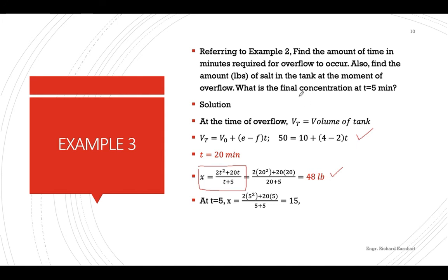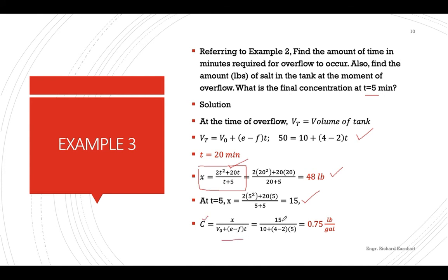We are also asked to find the concentration at t equals 5 minutes. Using the equation for x, substituting t equals 5 gives x equals 15 pounds. To get the final concentration, we use the formula x divided by the total volume: 15 divided by the total volume at t equals 5, which is 10 plus 2×5 equals 20 gallons. The concentration is 15/20 equals 0.75 pounds per gallon.